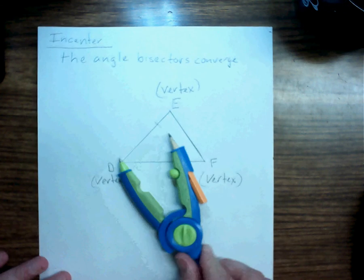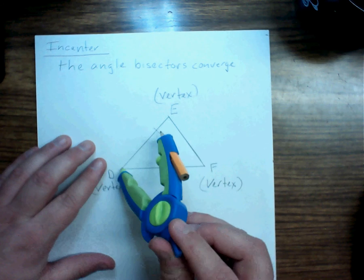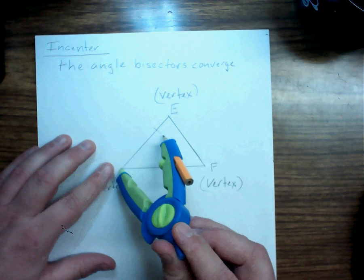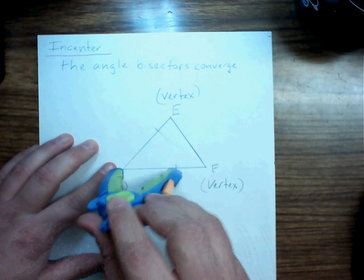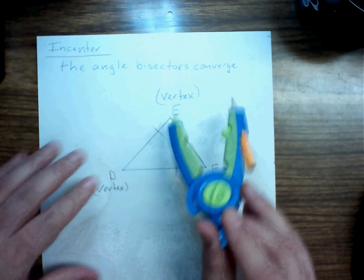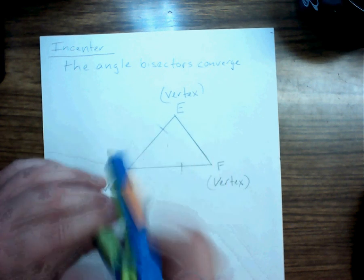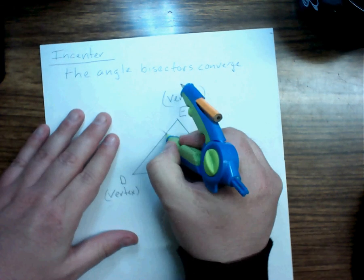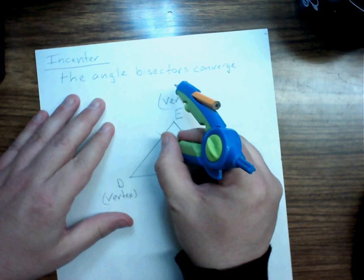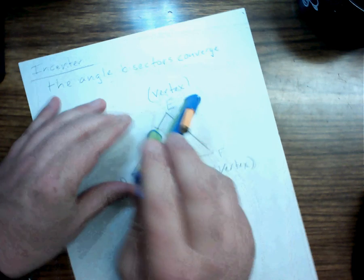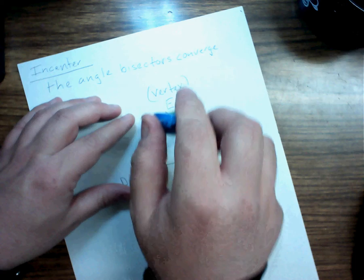Don't adjust the distance — leave the compass distance the exact same. So I'm going to make a little arc on DE, because that's the line segment that's part of angle D, and I'm going to do the same thing on DF. Then, where these two arcs intersect, I'm going to make a little point right here. I know that those arcs are going to cross somewhere over here, so I'm going to make a little arc outside.